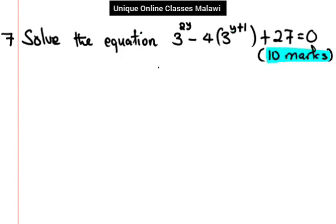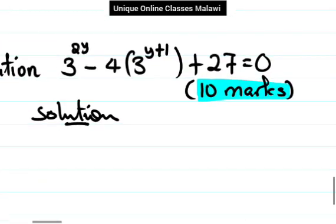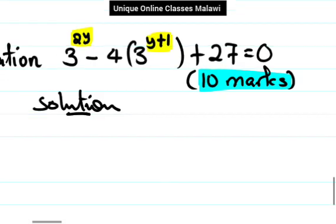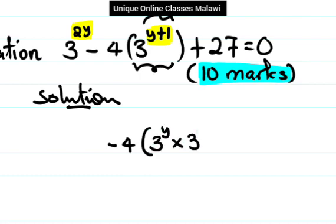So this is just a matter of playing with the laws of exponents. We can rewrite this as 3 minus 4 open the bracket, and whatever here can be 3 to the power y times 3 to the power 1 plus 27 equals zero.